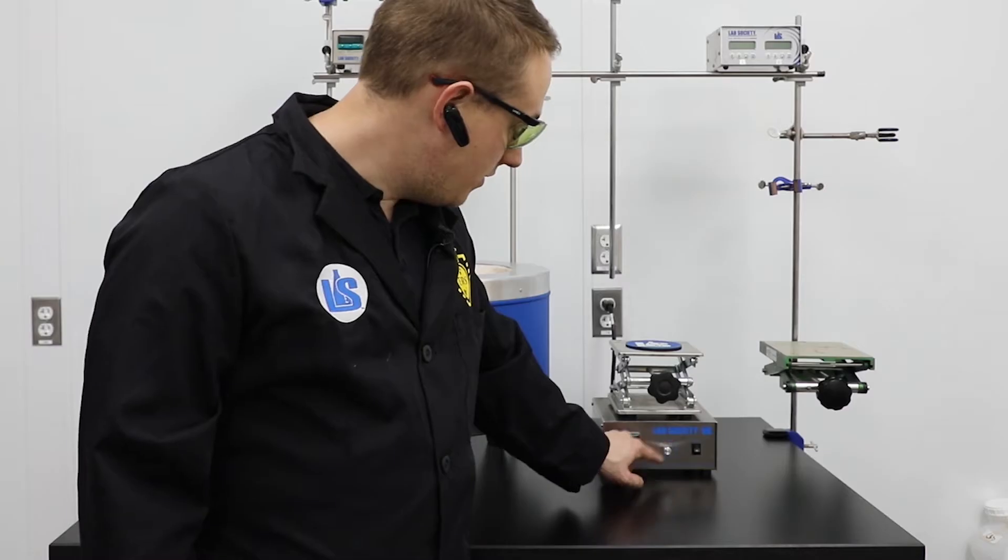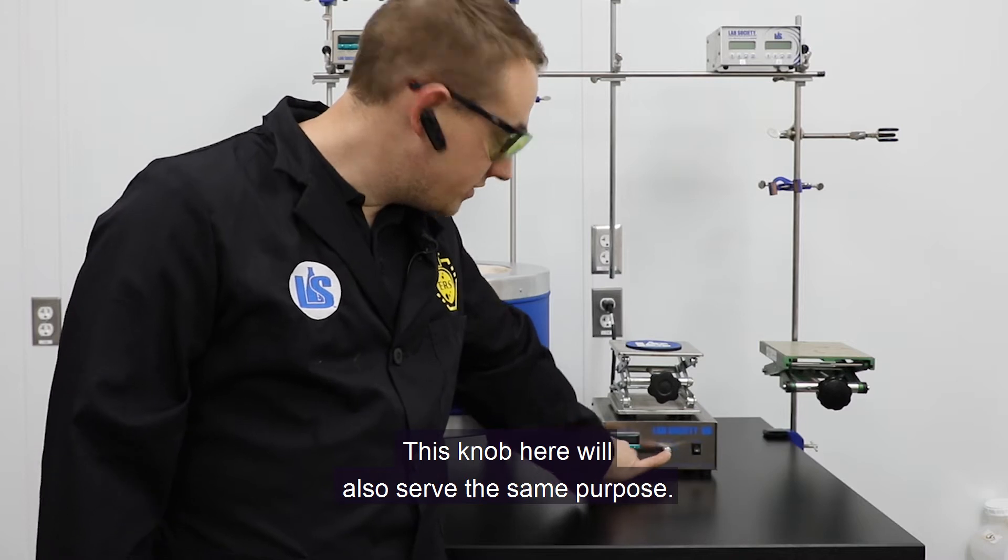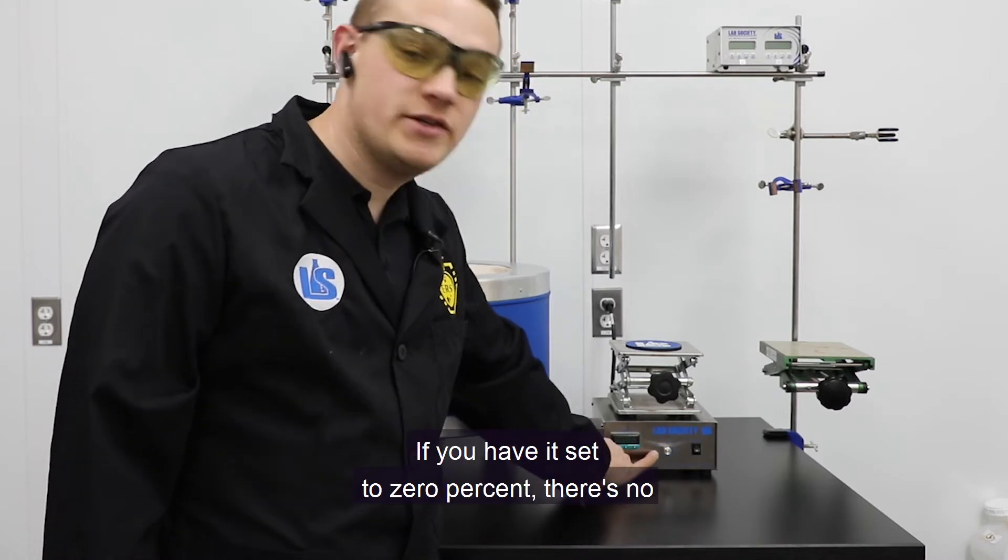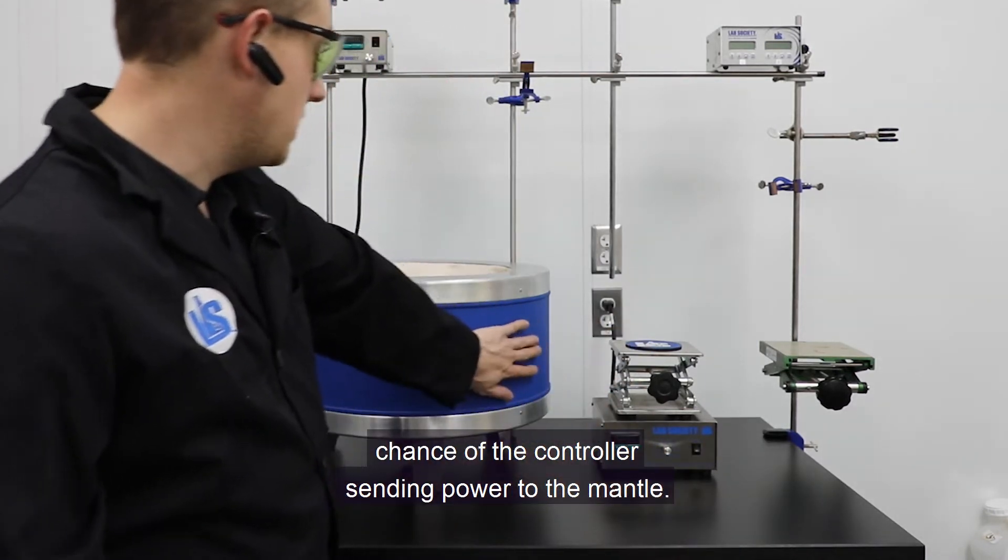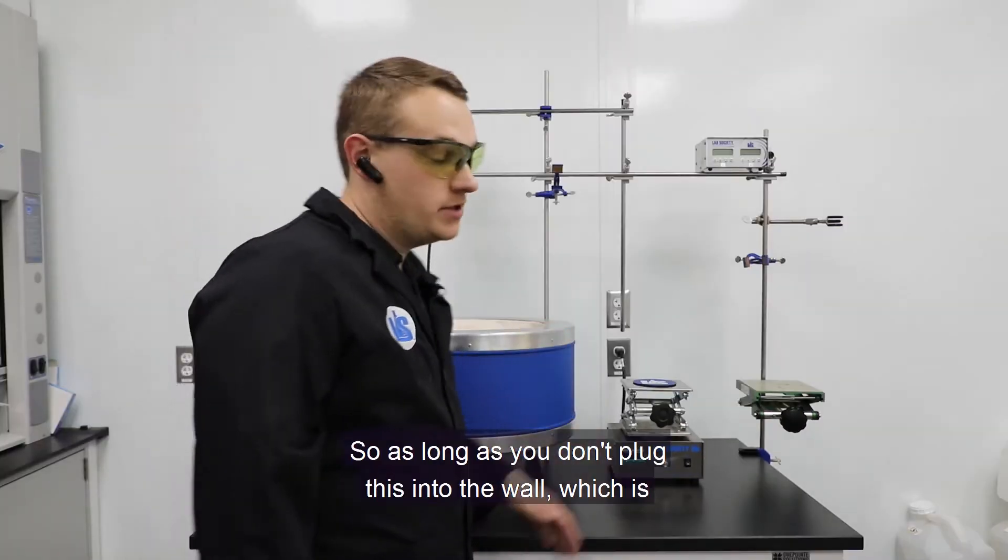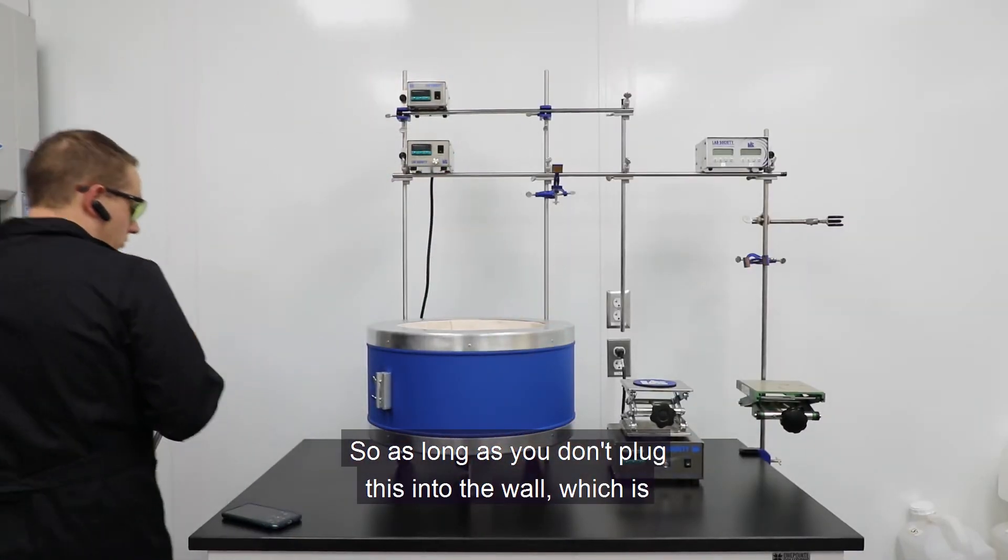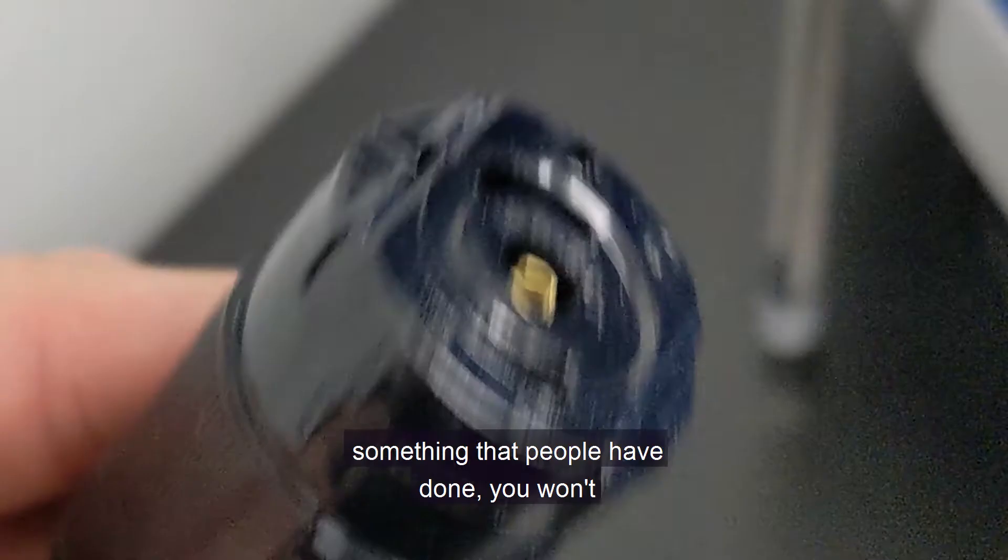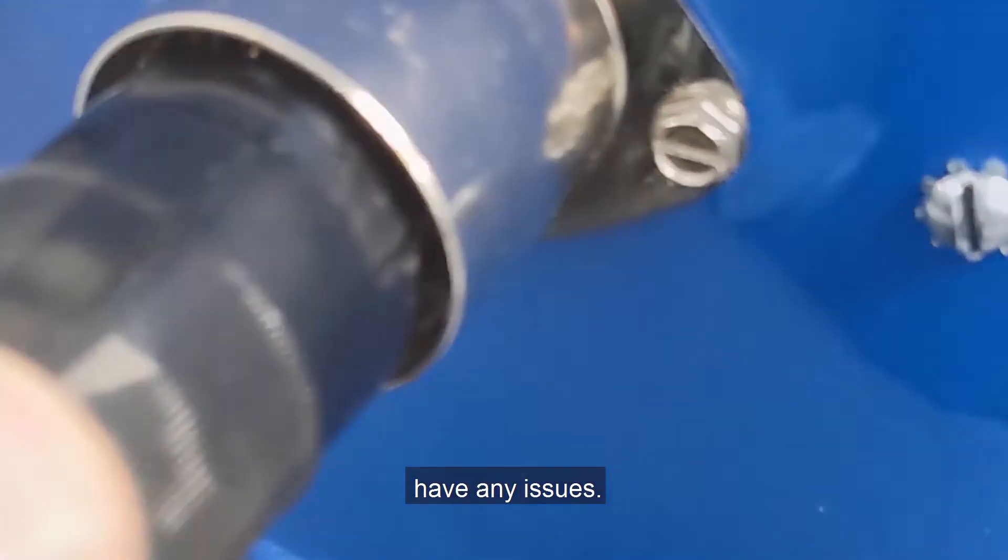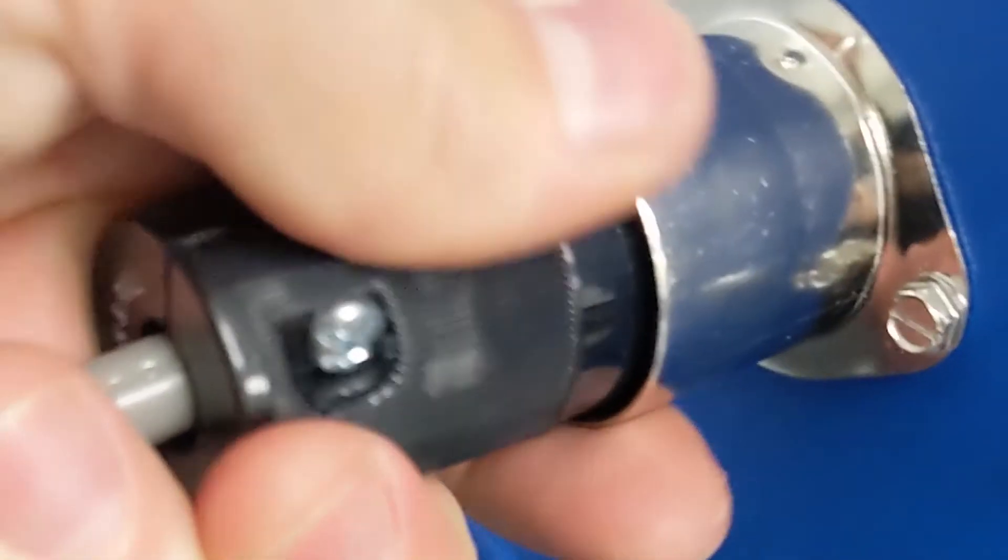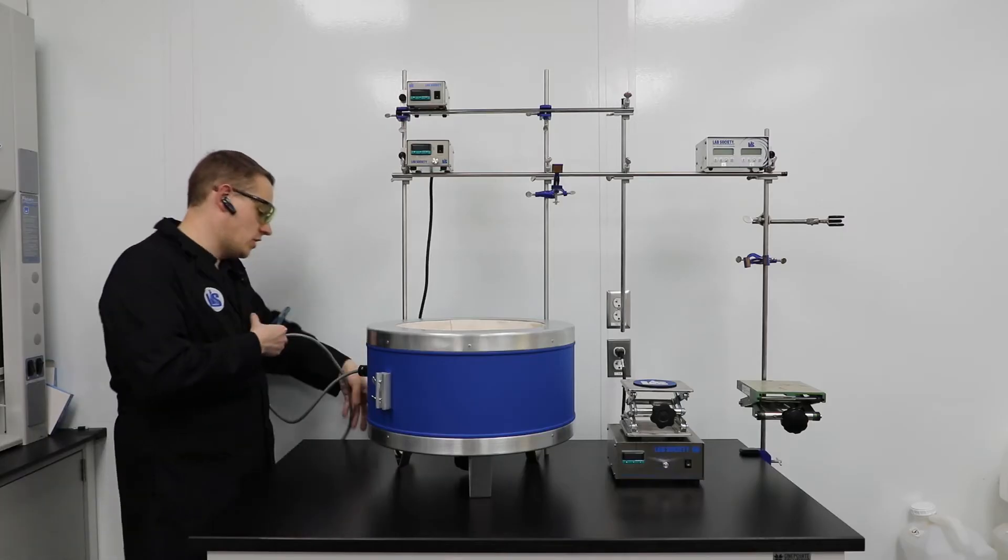This knob here will also serve the same purpose. Because if you haven't set it to zero percent, there's no chance of the controller sending power to the mantle. So as long as you don't plug this into the wall, which is something that people have done, you won't have any issues. Just like that. And this wire gets buried.